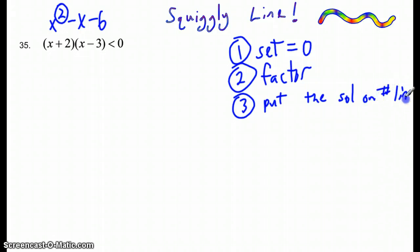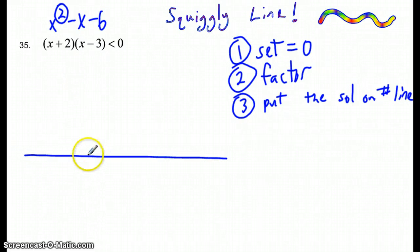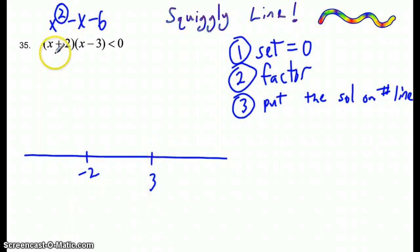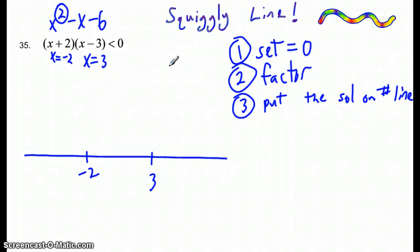When I say number line, it really is not going to have a lot of numbers on it. You just draw a line and mark that at negative 2 and at positive 3 I have some solutions. That's because each factor, if you set it equal to 0, gives x equals negative 2 and x equals positive 3.